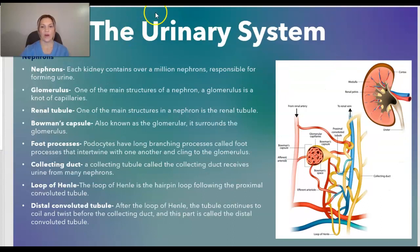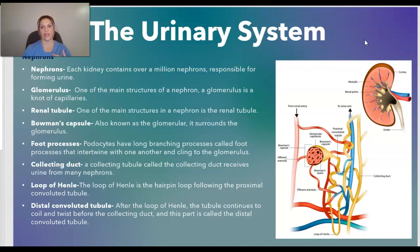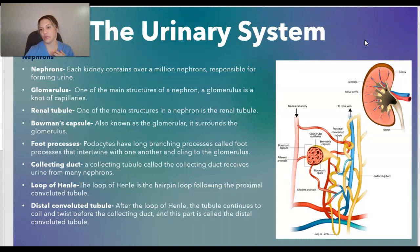Moving on to nephrons: nephrons are very important to the urinary system and to the kidneys. Each kidney contains over one million nephrons, responsible solely for forming urine. One of the main structures of the nephron is the glomerulus, which is a knot of capillaries. Another main structure is the renal tubule.